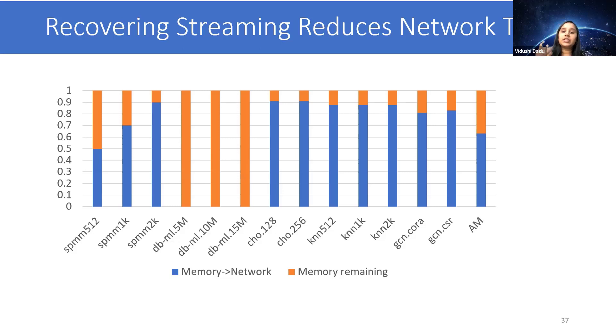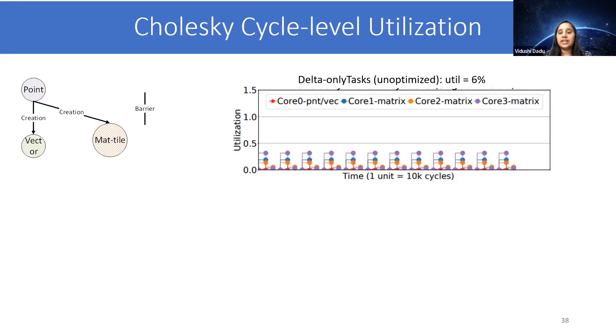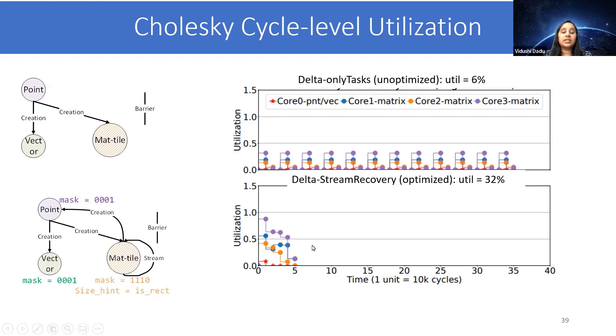So now we looked at what was the impact of stream recovery. We also want to understand overall how these stream recovery and load balancing work together. For that, let's look into the cycle level utilization of the Cholesky workload for two scenarios. For the first one, we show for only tasks, which is not optimized. The thing here is that you cannot do the streaming communication. So you still have a barrier after each iteration, but within that you can balance using the size optimization. When you switch on the stream recovery optimization, there are no barriers, and also you improve on the utilization. The reason is because the streaming edge results in improved parallelism, and then only the load balancing optimizations can help you more. So they work together to help each other.